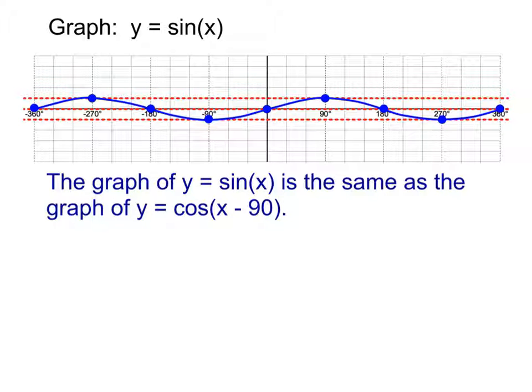The graph of y equals sine of x actually is the exact same graph as y equals cosine of x minus 90. They aren't just close to each other. They aren't just related. They are actually the exact same graph because sine and cosine are so closely related to what they do in a circle. They're giving us x and y coordinates. The graphs have so much similarity as well. And so if you know how to graph cosine, learning how to graph sine is actually going to be just one small step more.